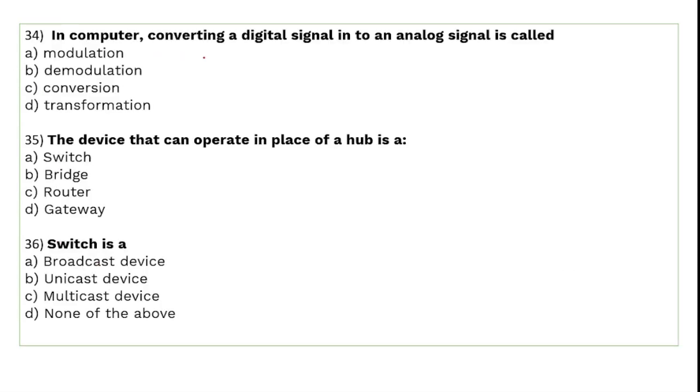In a computer, converting a digital signal into an analog signal is called modulation. Computers work with digital signals, but when data travels through telephone lines it must be in analog form.